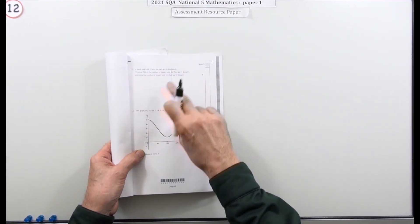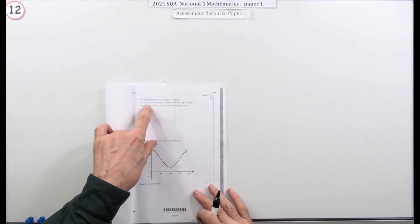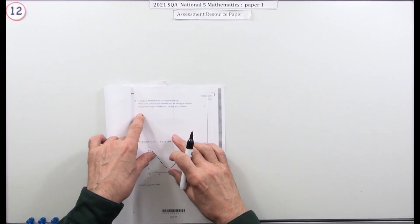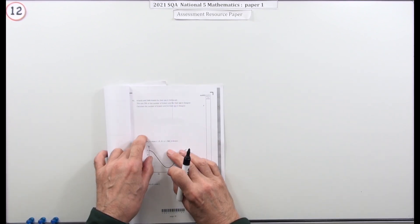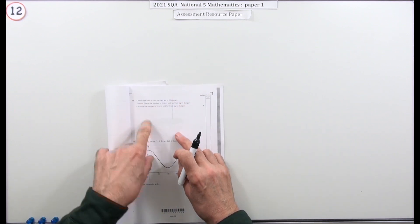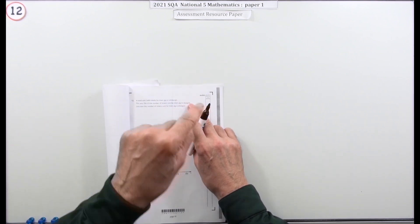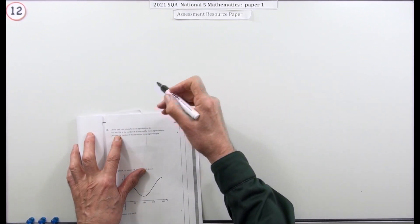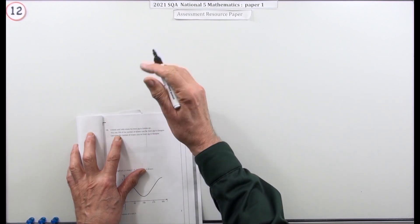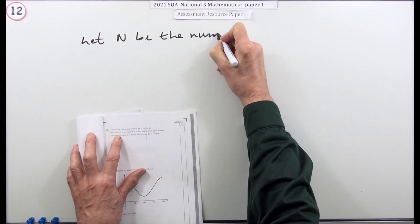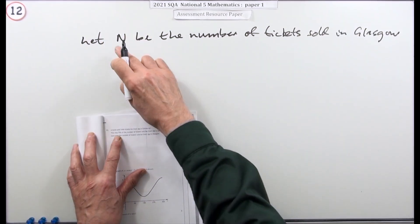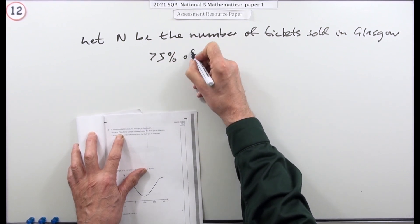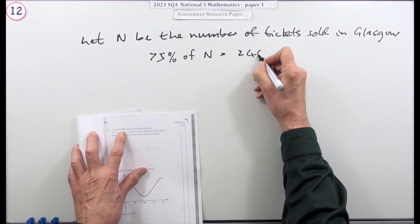Number 12: three marks of arithmetic — a reverse percentage question. You're told part of the amount, not the full amount, and you have to work back. A van sold 2,400 tickets in Edinburgh, but that was only 75% of the tickets sold in Glasgow. You need to find the Glasgow total, which is larger. Let N be the number of tickets sold in Glasgow.